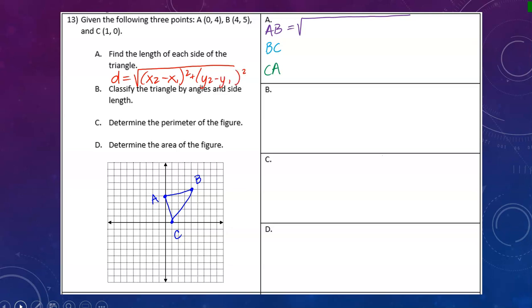For AB, I use points A and B. I plug in 4 minus 0 and 5 minus 4. This comes out to be the square root of 17. It doesn't simplify, so we'll leave it as is.